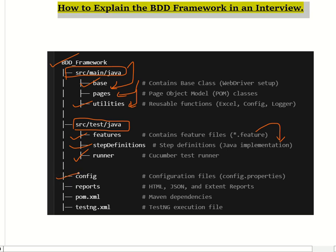The config file stores configuration information like environment properties, API URLs, and credentials. In the reports folder, we generate reports in HTML and JSON format. These folders store the test reports generated after execution, such as cucumber-reports.html.